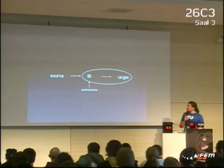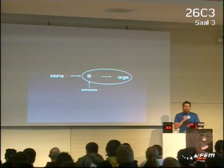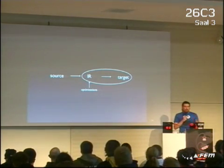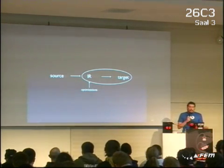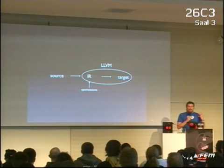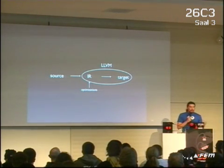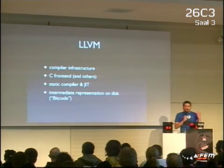If you look at intermediate representation to target recompilation, this is a very well-understood problem, and pretty much every compiler does exactly that. So why not just use an existing compiler — for example, LLVM — for the back-end of a recompiler? And that's what this project is doing.